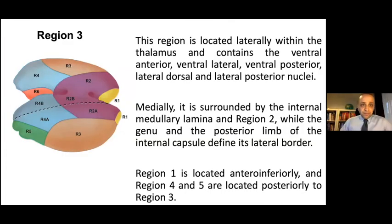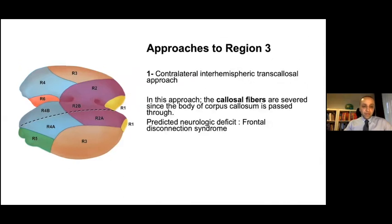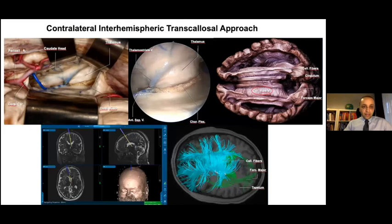Region 3 is located laterally within the thalamus and contains the ventral anterior, ventral lateral, ventral posterior, lateral dorsal, and lateral posterior nuclei. For reaching Region 3, we used the contralateral interhemispheric transcallosal approach. In this approach, the callosal fibers are severed, with related neurologic deficits of frontal disconnection syndrome. The contralateral approach provides a more feasible angle and exposure for the lateral thalamus. The close adjacency of the internal capsule just lateral to the thalamus must be kept in mind during removal of lateral thalamic lesions.